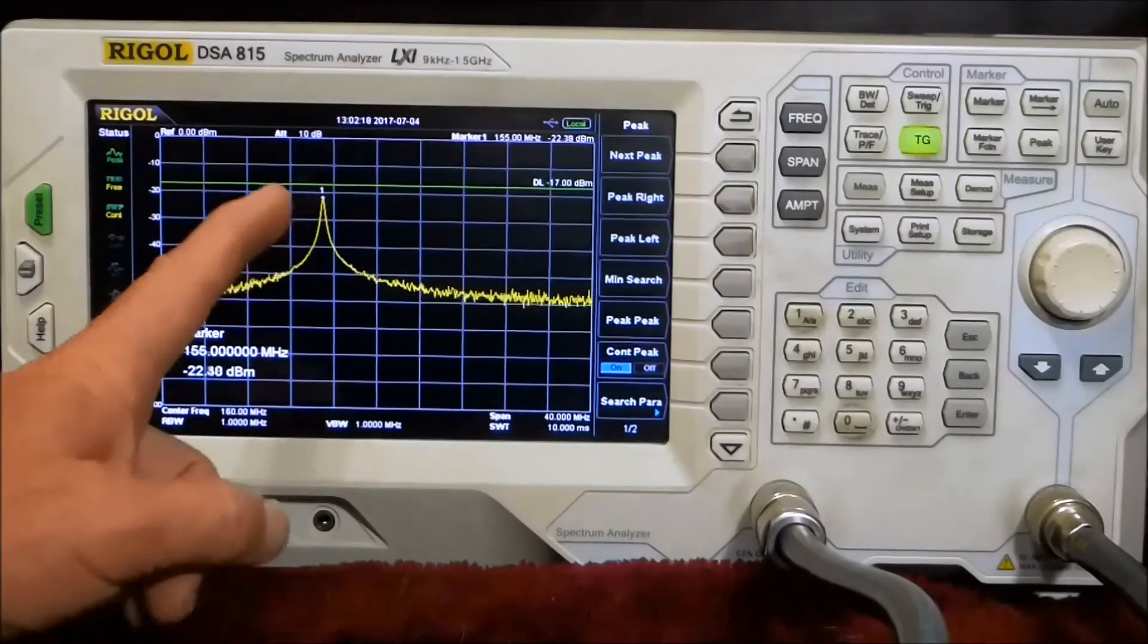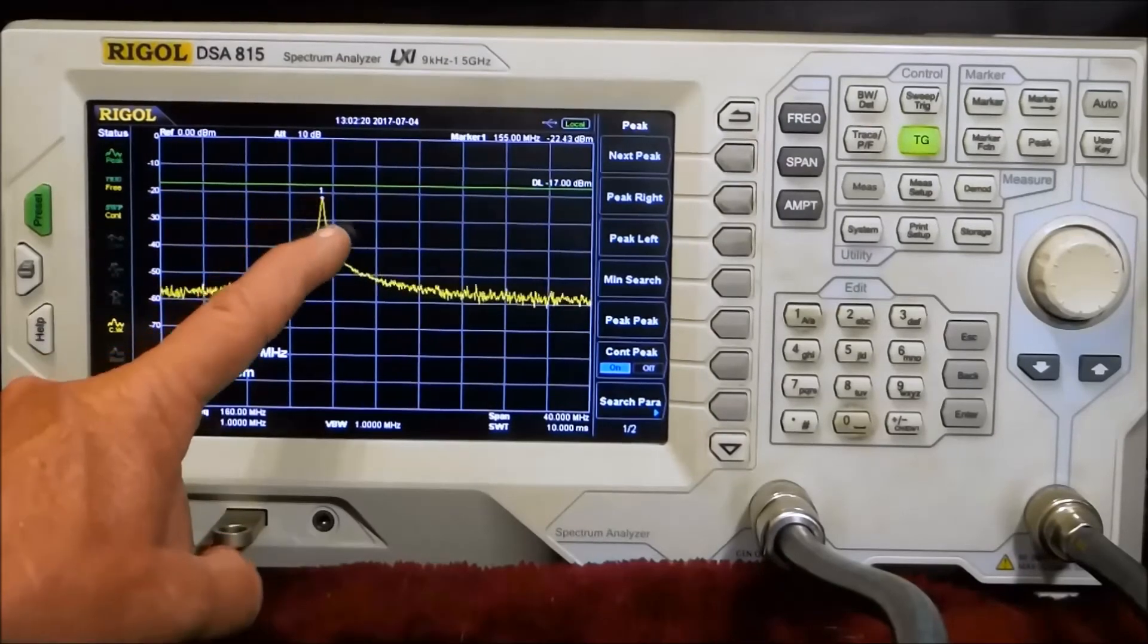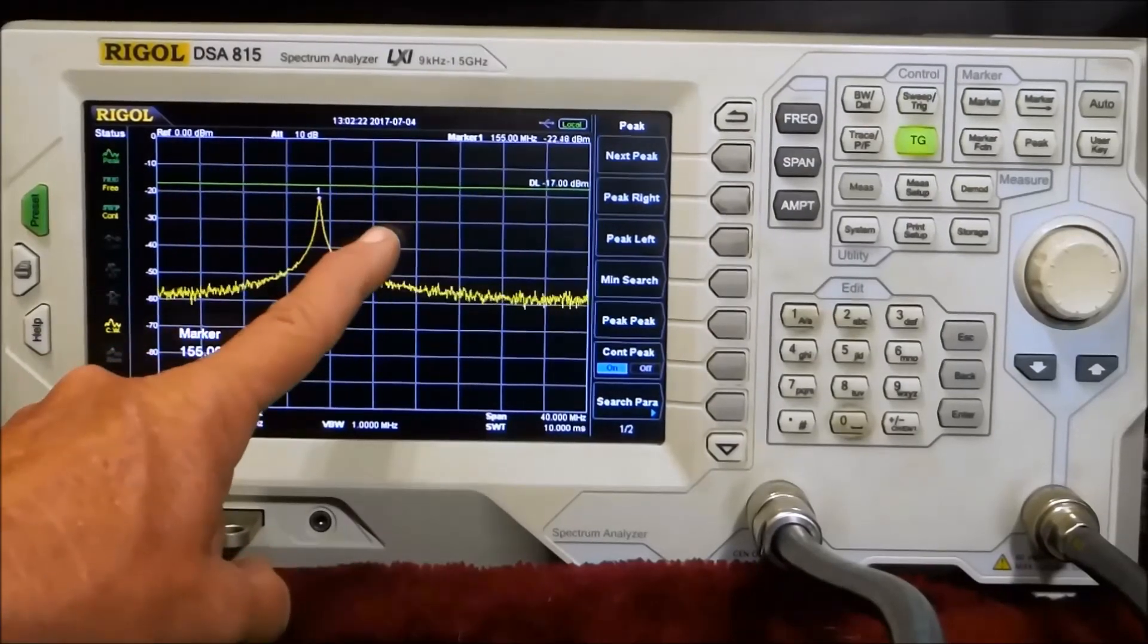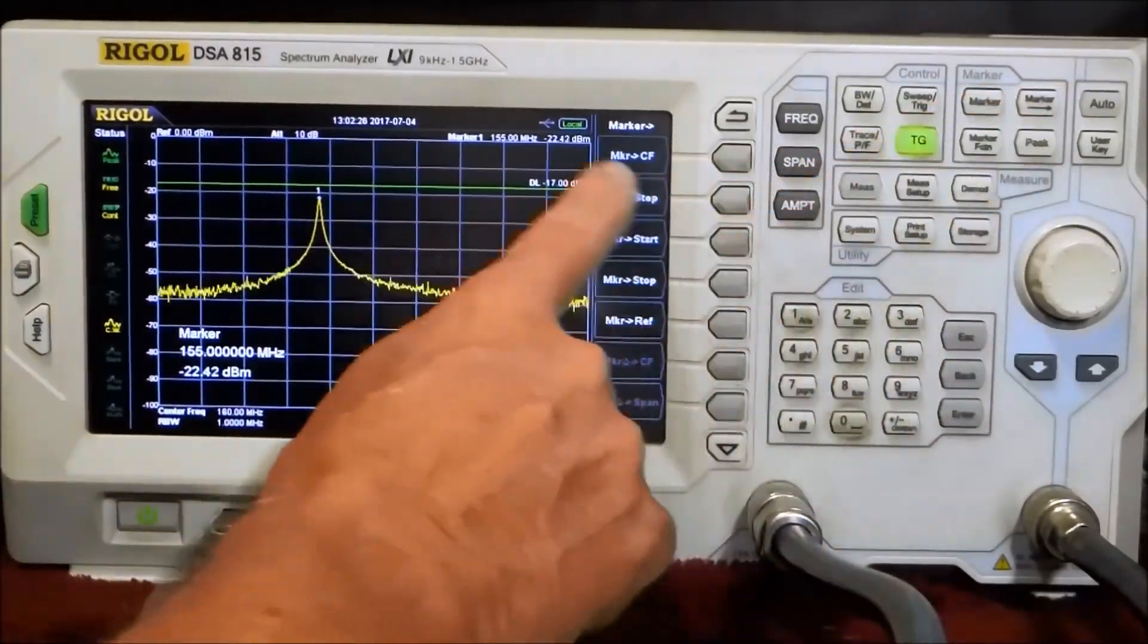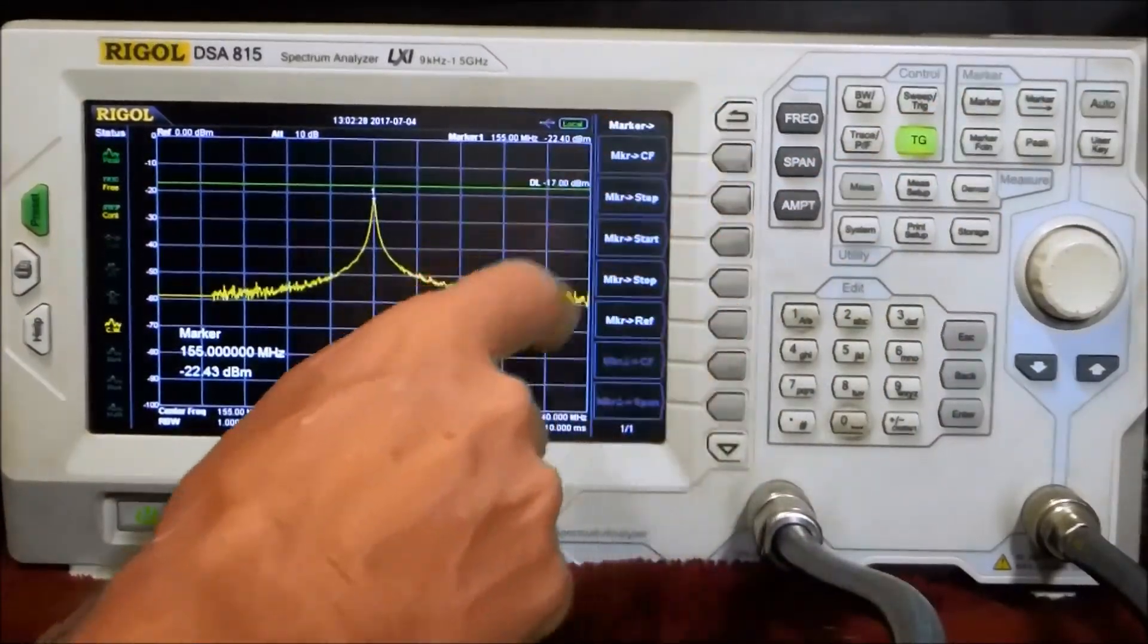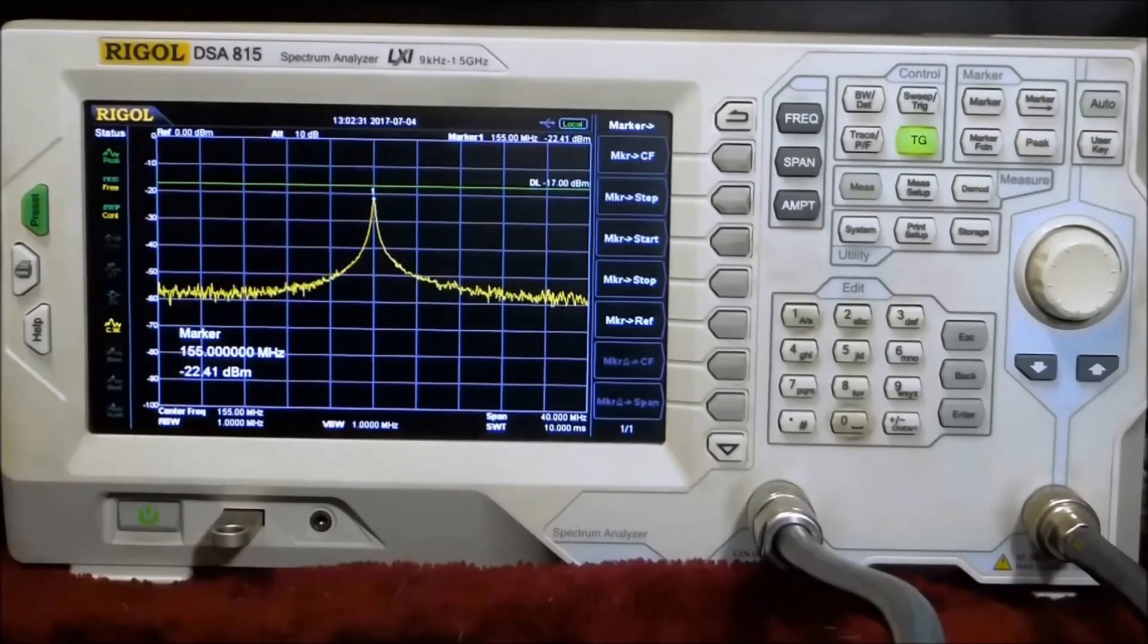Let us put our center peak over in the center here, which is easily done on this machine. We're going to marker to center frequency. Now it's in the center, 155.000.